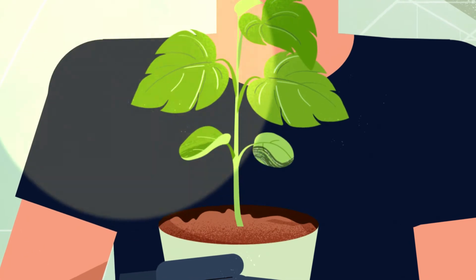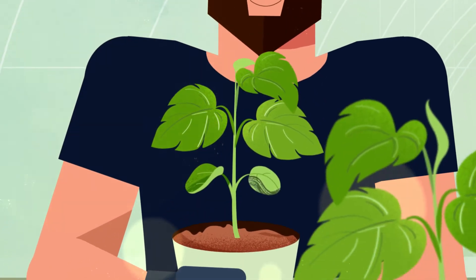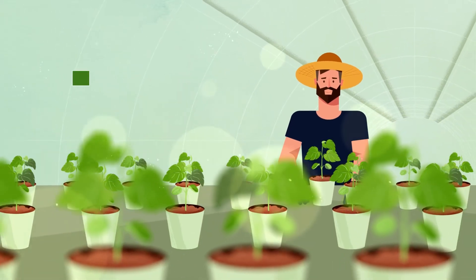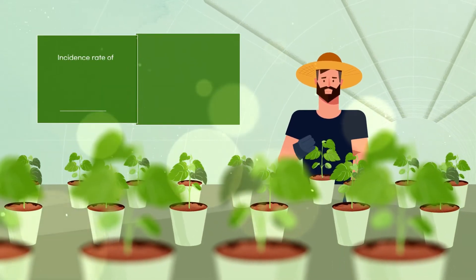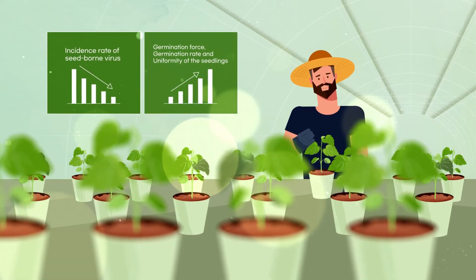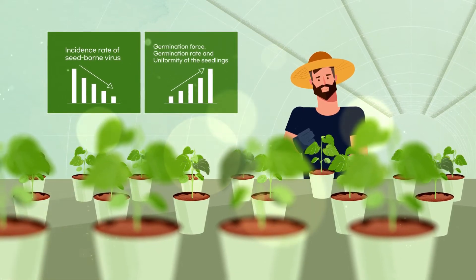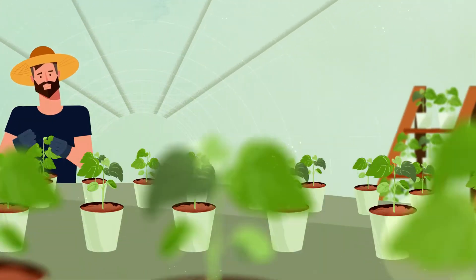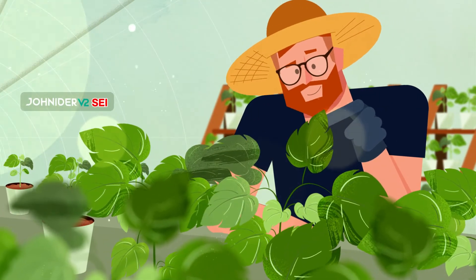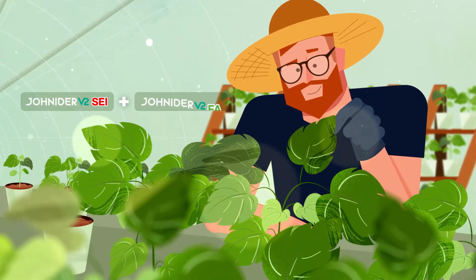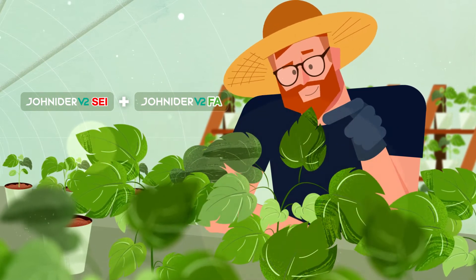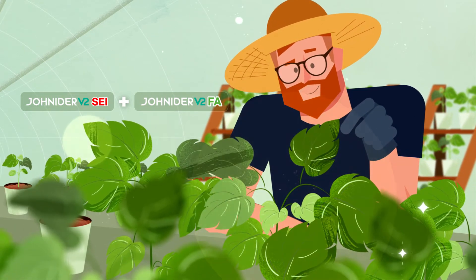When such seedlings are transplanted and cultivated, the incidence rate of seed-borne virus decreases, while germination force, germination rate, and uniformity of the seedlings all increase. Also, when Joneter V2 FA is concurrently used for the seedlings germinated from seeds immersed in Joneter V2 SEI, virus infections may be further minimized and vital growth may be induced.